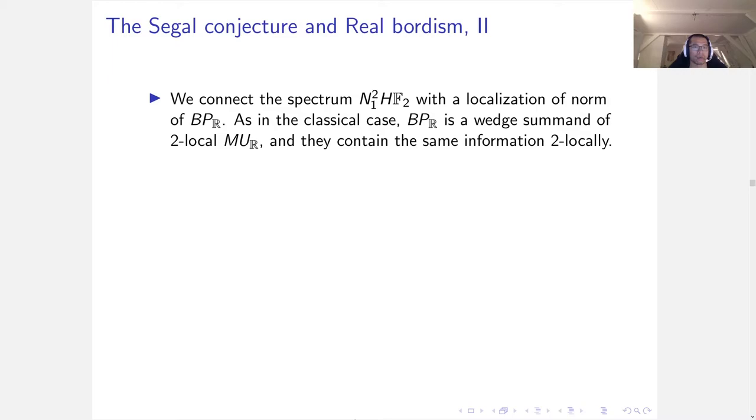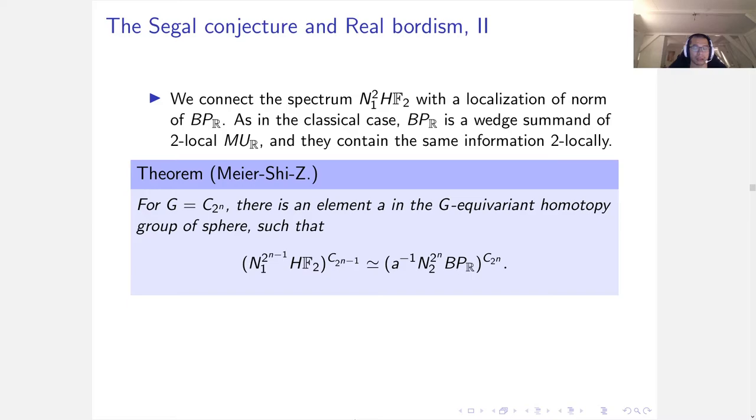We attack this problem by relating the norm of HF2 with a localization of norm of BP_R. As in the classical case, BP_R is the wedge sum of 2-local MU_R and they contain the same information. Our first theorem says one can compute the fixed point of norm of HF2 by doing a localization on norm of BP_R, then taking fixed point.